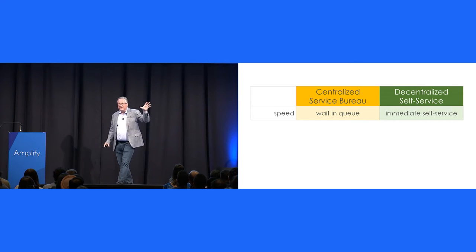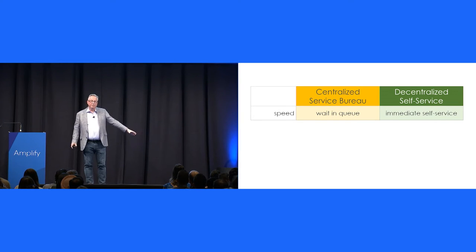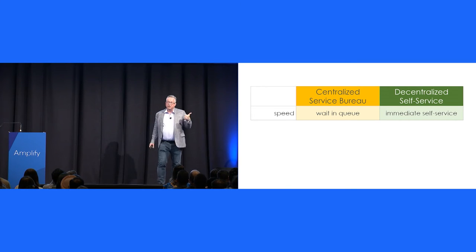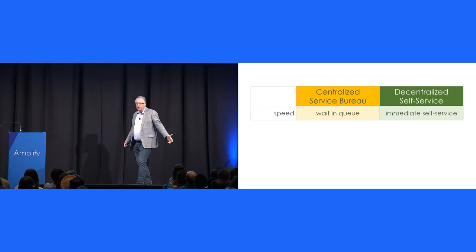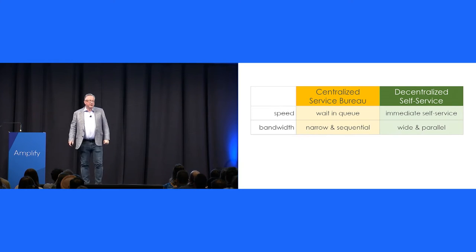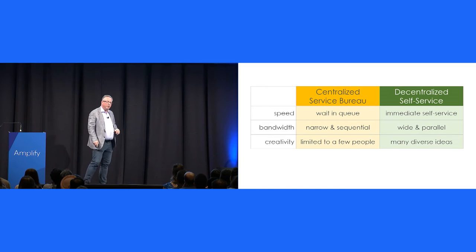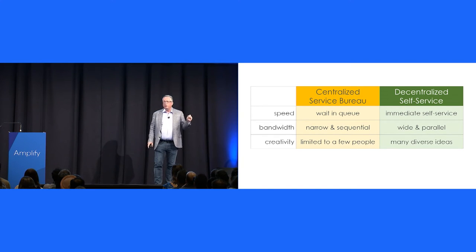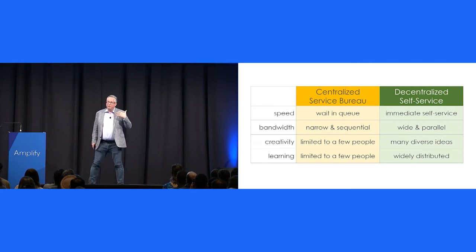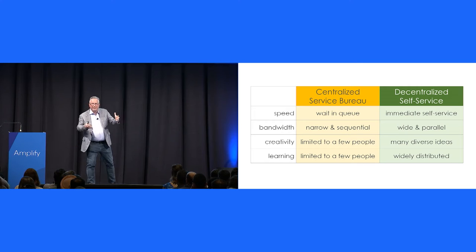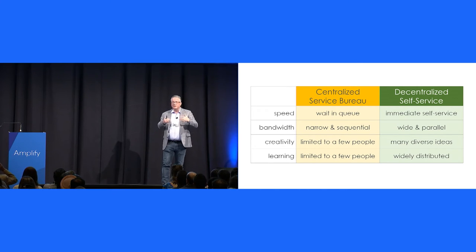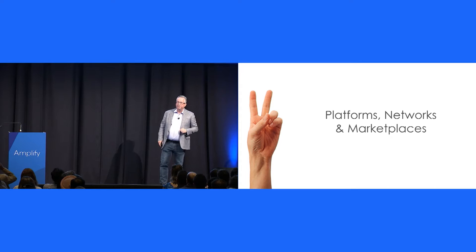Now, over time, of course, Clay Christensen's disruptive innovation theory would suggest these things start to serve higher end use cases as well. But generally, what I think you see is ultimately, then even the experts start to leverage more and more of these no code tools as a way to accelerate what they do. There's so many benefits to this. This old way of doing things with like a centralized service bureau style team versus no code empowerment with decentralized self-service. Think about the advantage of speed. Instead of waiting in a queue, you can now get immediate self-service. Bandwidth, instead of it being bottlenecked to a narrow and sequential team, it becomes wide and parallel across the entire org. Creativity, now it's no longer just a few people who are actually doing this, but many diverse ideas that can be explored. And because we learn by doing, that learning is now no longer just locked within a small team, but it's being widely distributed as well.